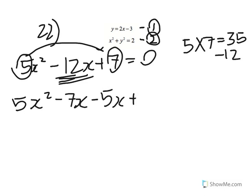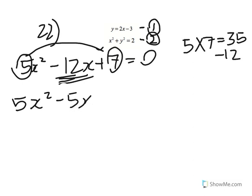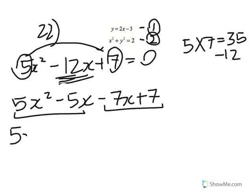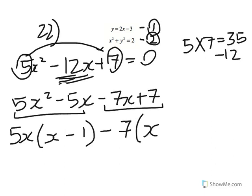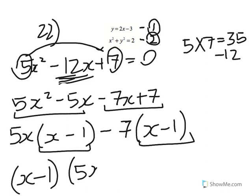We split the middle term into minus 5x minus 7x plus 7, then factorize each group separately. We get 5x(x minus 1) minus 7(x minus 1), and factoring out (x minus 1) gives (x minus 1)(5x minus 7) equals 0.